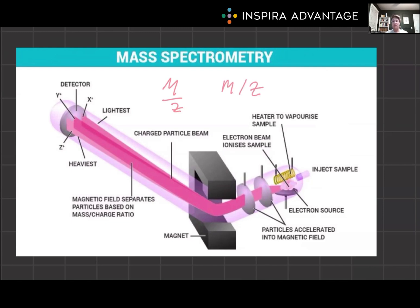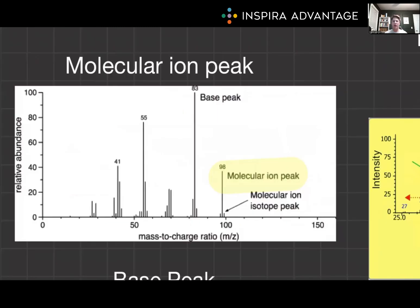A mass spectrometer consists of three main components: an ionization source, a detector, and a mass analyzer. The most common ionization method for organic compounds is electron ionization, which involves bombarding the sample with high energy electrons. This process causes molecules to lose an electron and form radical cations, often referred to as molecular ions or M+ with a dot. For the MCAT, you don't need to worry too much about how it works, but it's nice to know because it'll help everything else make sense. What you do need to know are the key features of a mass spectrum and how they relate to the structure of organic compounds.